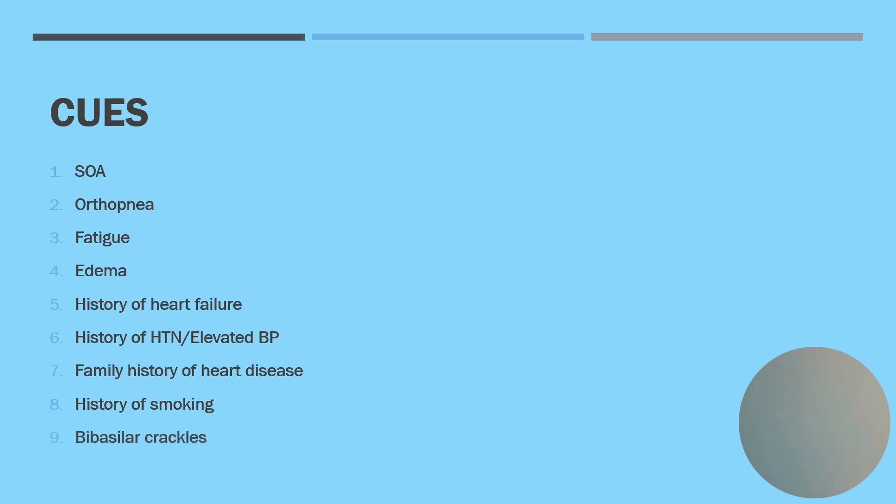He's short of air. He has orthopnea. He has fatigue. Edema. A history of heart failure. A history of hypertension, and his blood pressure is elevated. A family history of heart disease. That history of smoking. Bibasilar crackles. In other words, crackles in both of the bases of the lungs. And an irregular heart rate.